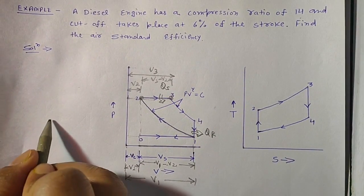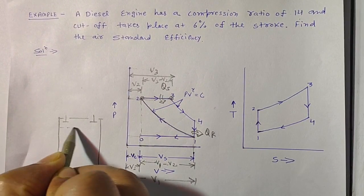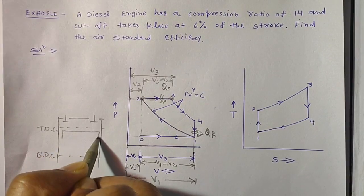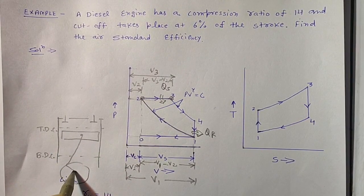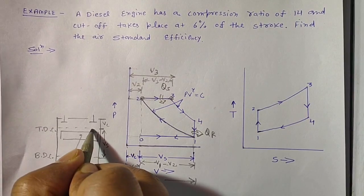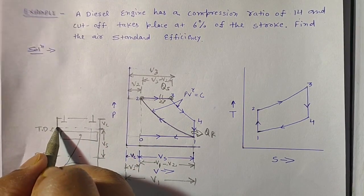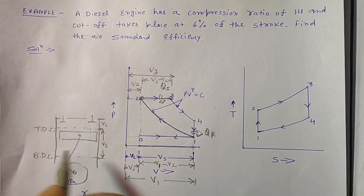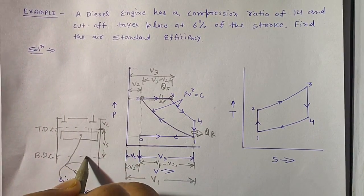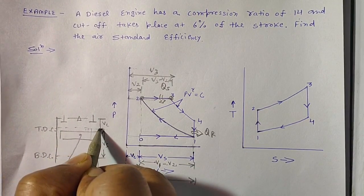Consider the engine cylinder: this is your inlet valve, this is your exhaust valve, TDC is top dead center, BDC is bottom dead center, and we have the piston, crank, and connecting rod. The clearance volume is Vc and the swept volume is Vs. The piston moves from TDC to BDC — this distance is the stroke. Cut-off takes place at 6% of the stroke, meaning combustion starts when the piston is at TDC and cuts off when the piston is only 6% down.